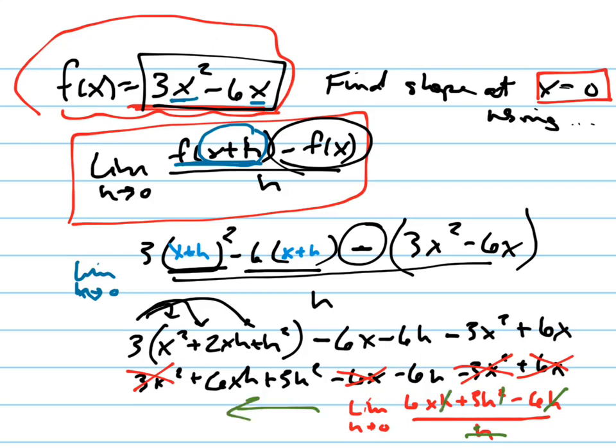So make sure you cancel it out of everything. So here's my answer. I'm going to write it over here now. Now it's the limit as h goes to 0 of 6x plus 3h minus 6.